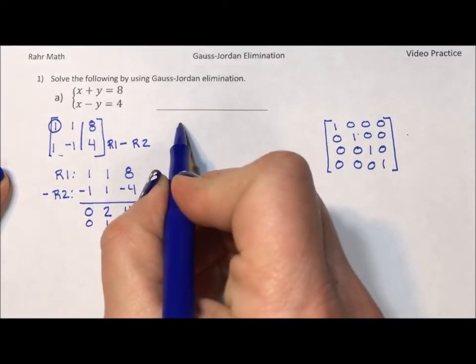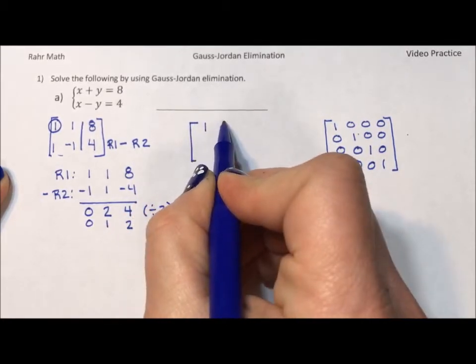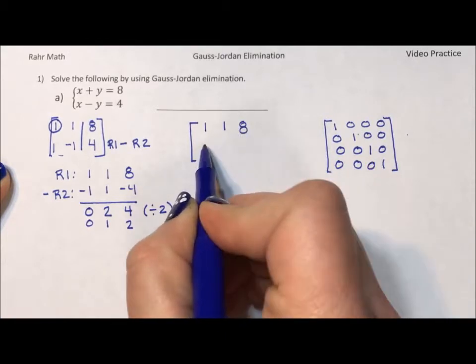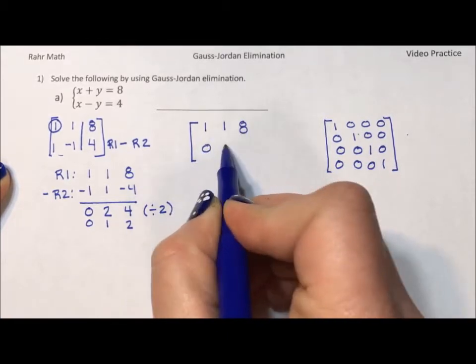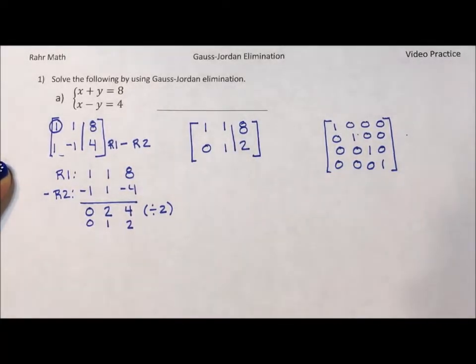Okay, so I'm going to move across. I didn't change my first row, 1, 1, 8. My second row became 0, 1, 2. Brackets for a matrix, line for an augmented matrix.